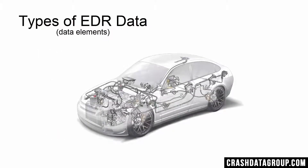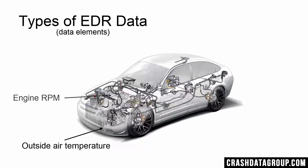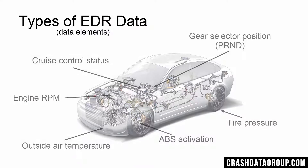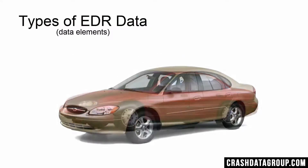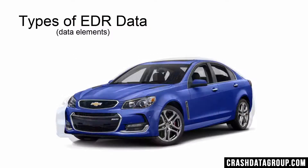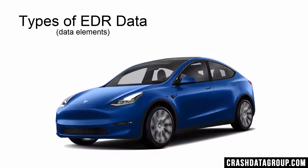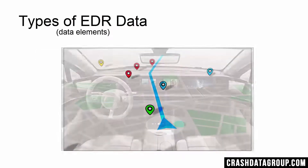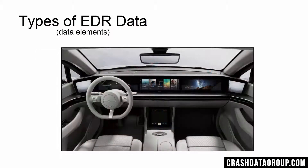Auto manufacturers are not limited in the amount and types of data that are made available. Many existing systems contain other useful data elements beyond what was just mentioned. As vehicle technology continues to advance, more and more data elements are being added to EDRs. Things such as video images, geolocation, and others — although not widely available today — may be integrated into future EDR systems.